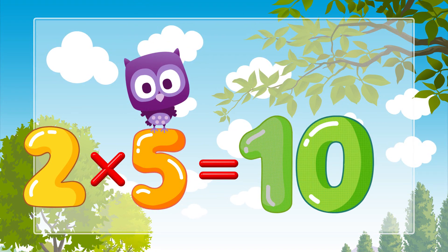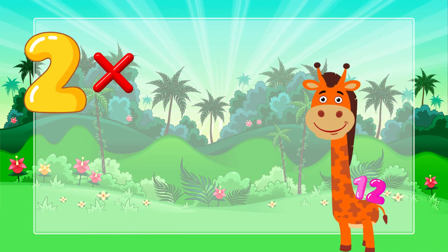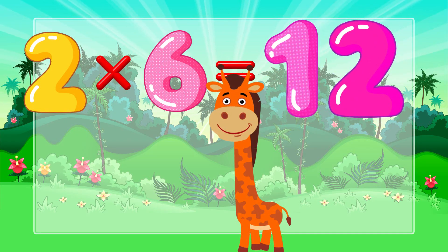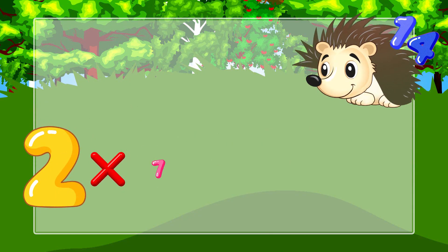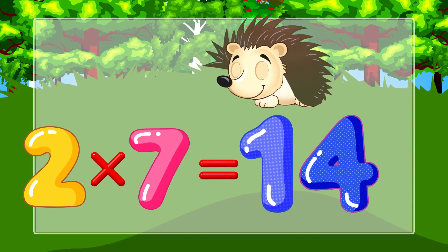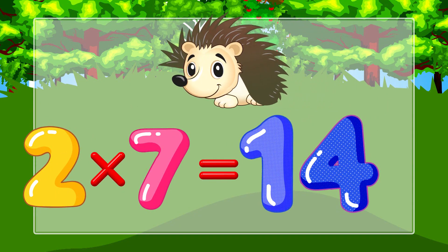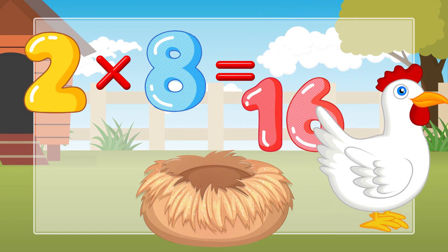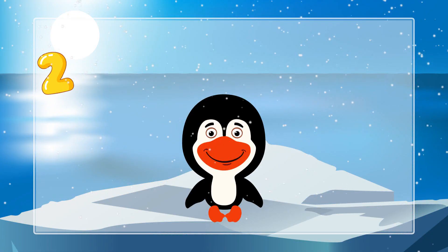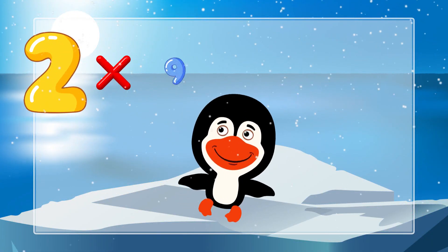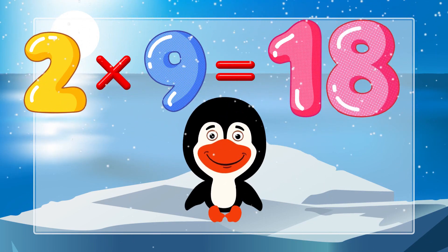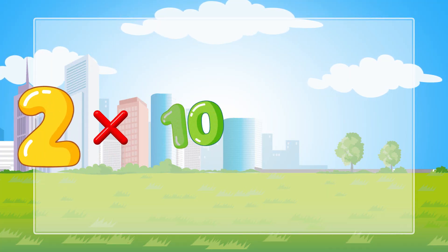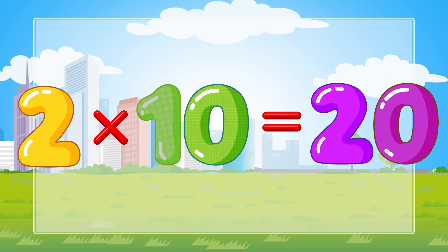Two times six is twelve, two times seven is fourteen, two times eight is sixteen, two times nine is eighteen, two times ten is twenty.